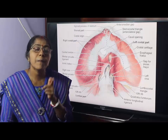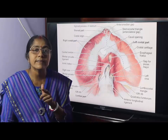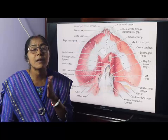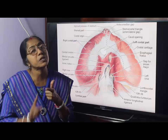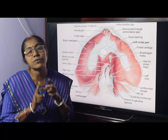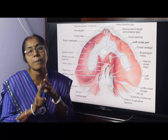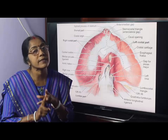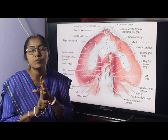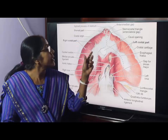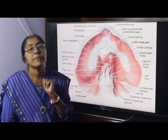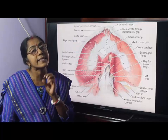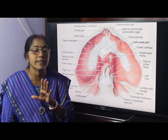What type of muscle is the diaphragm? It is a skeletal muscle. We know there are three types of muscle: skeletal muscle, cardiac muscle, and smooth muscle. The diaphragm is composed of skeletal muscle.